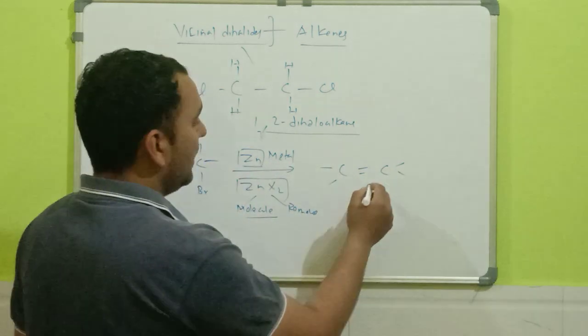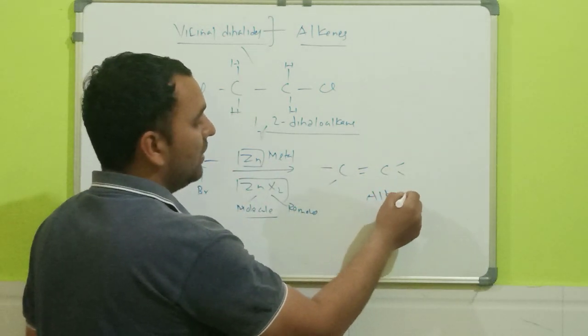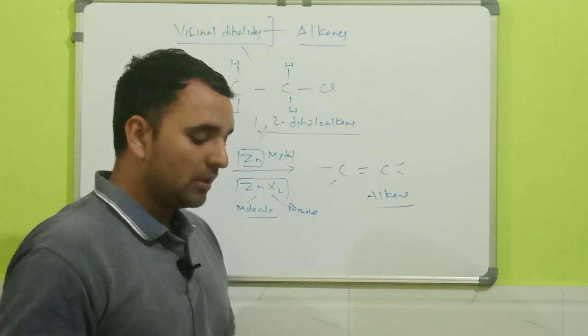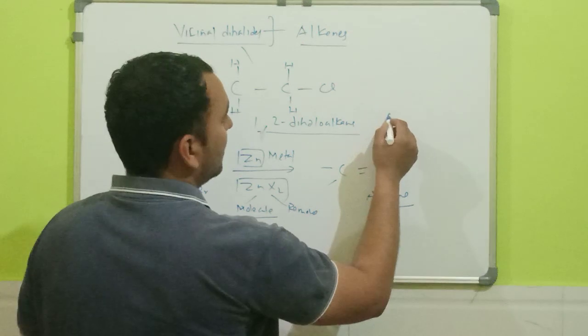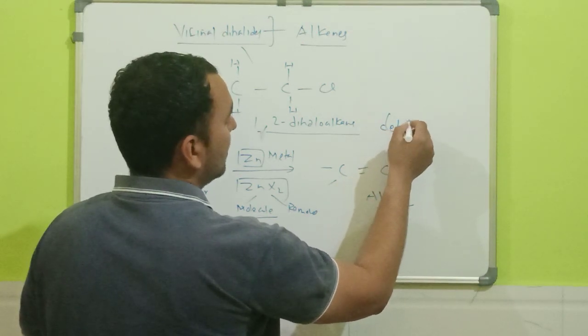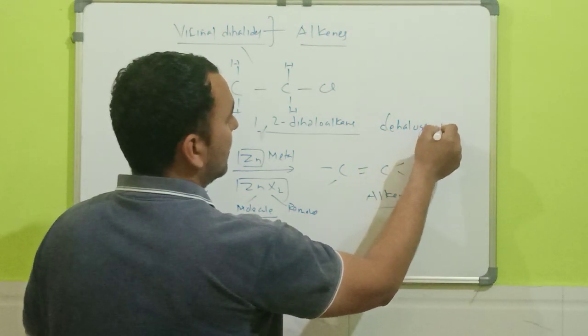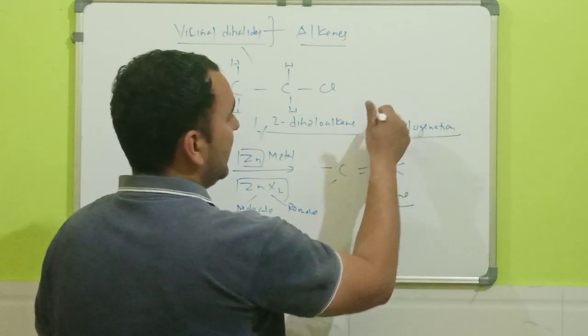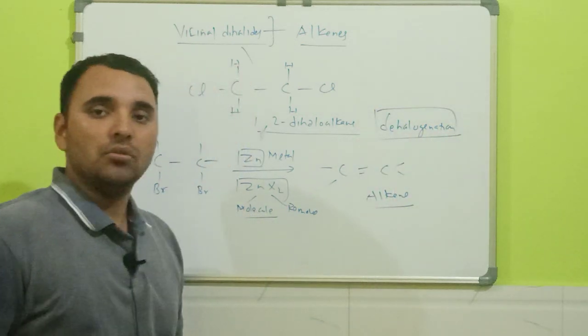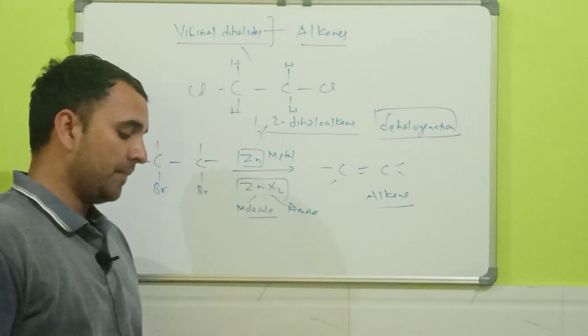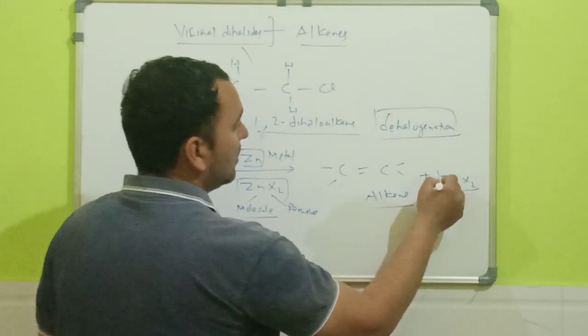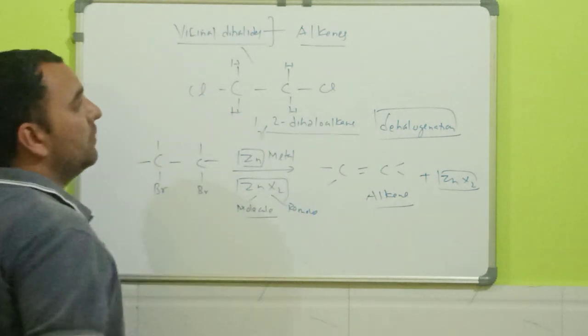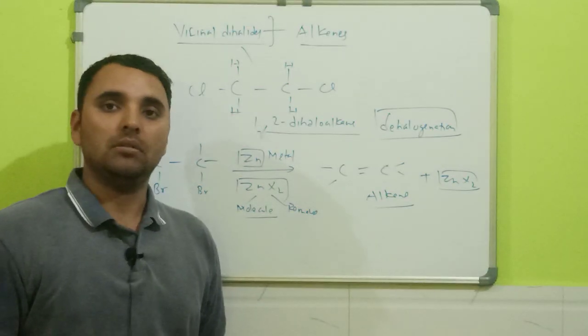This reaction is also called dehalogenation reaction, and the remaining product will be lower ZnX. So this way the preparation of alkenes is done from vicinal dihalide. Thank you.